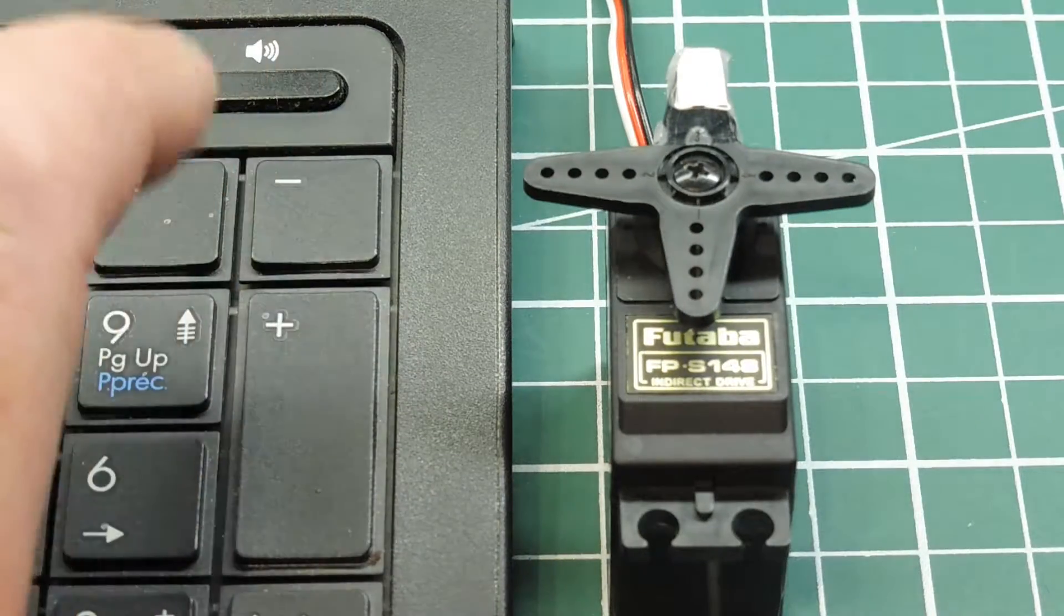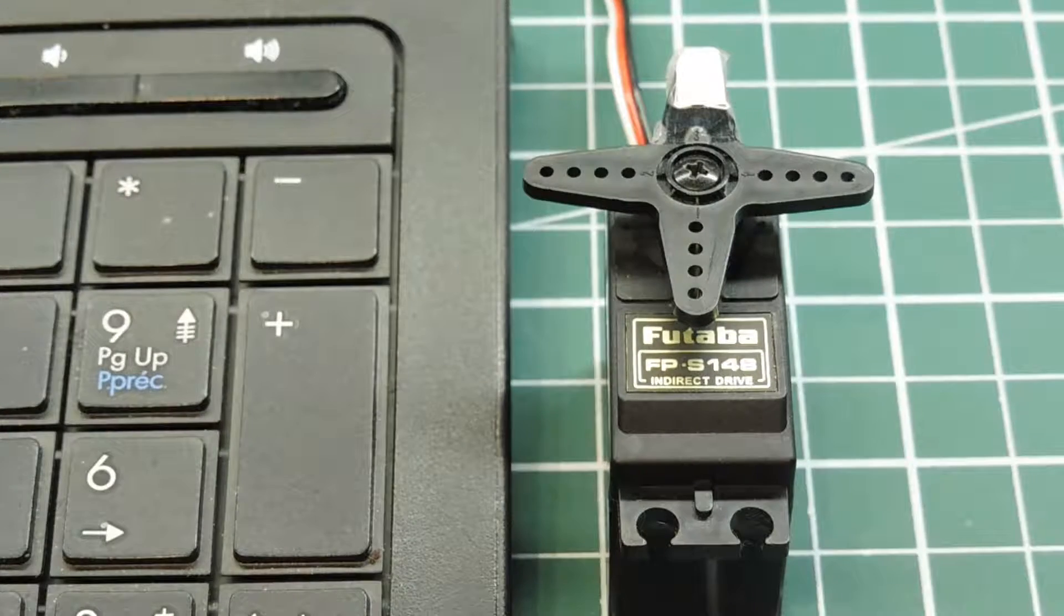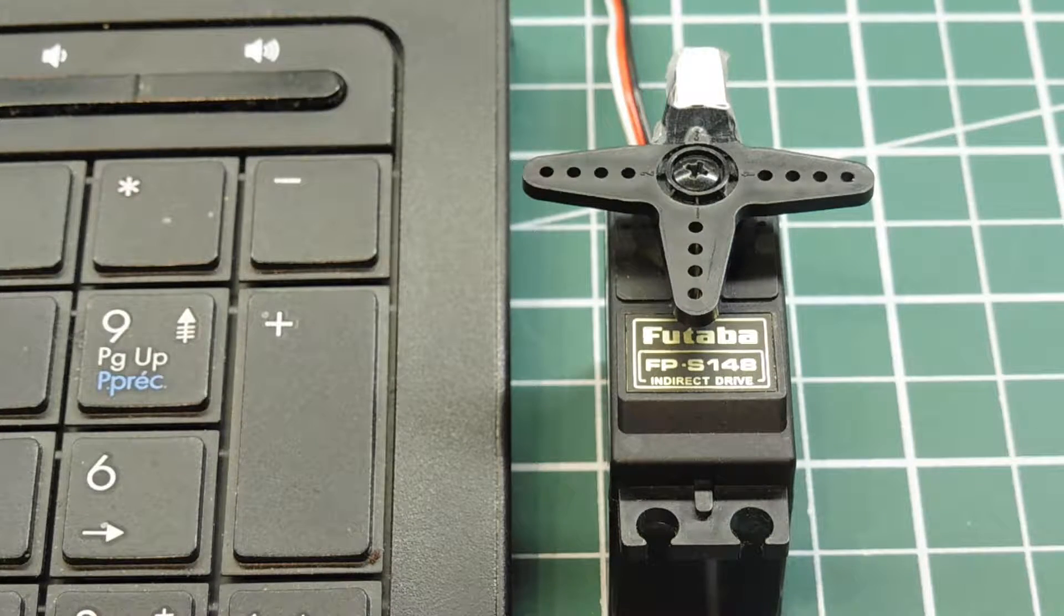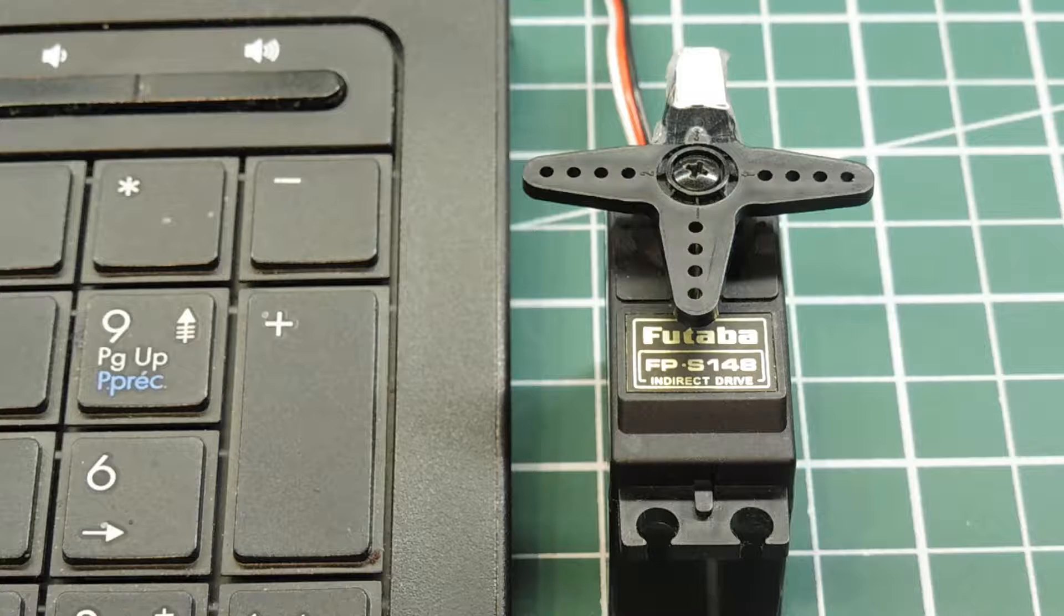Now some servos only have a range of motion of 90 degrees, and other servos have a range of 360 degrees, which is continuous rotation.